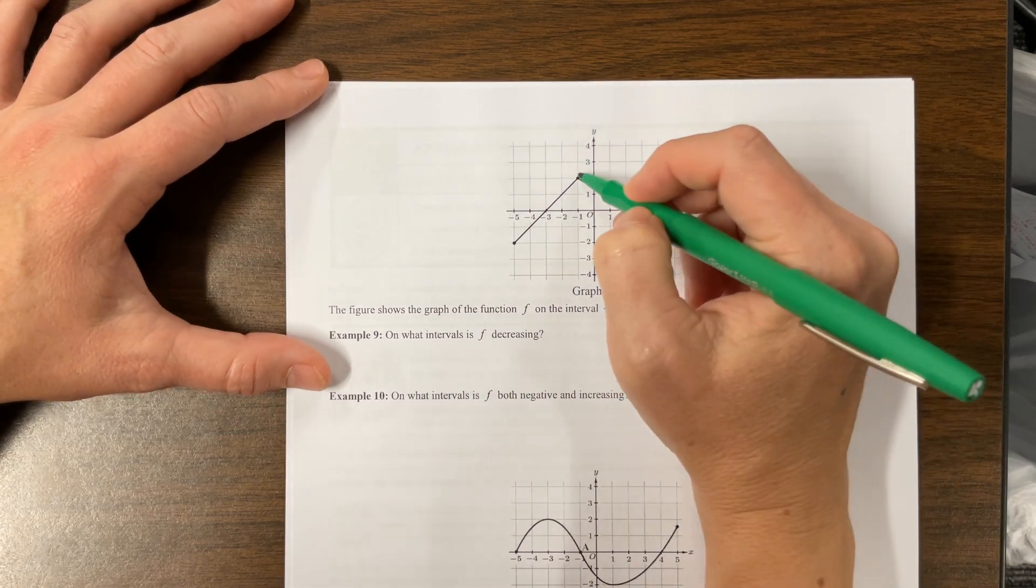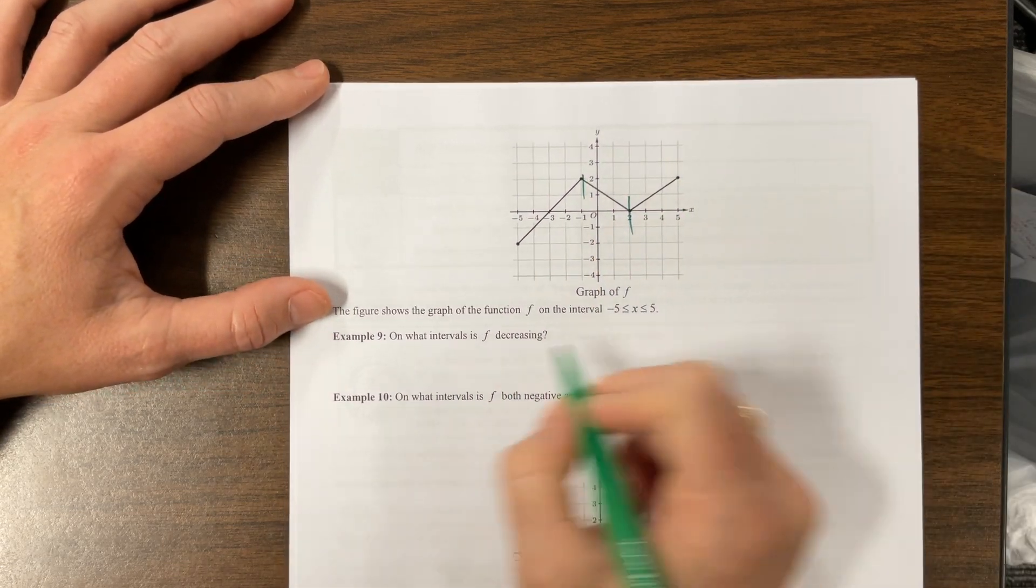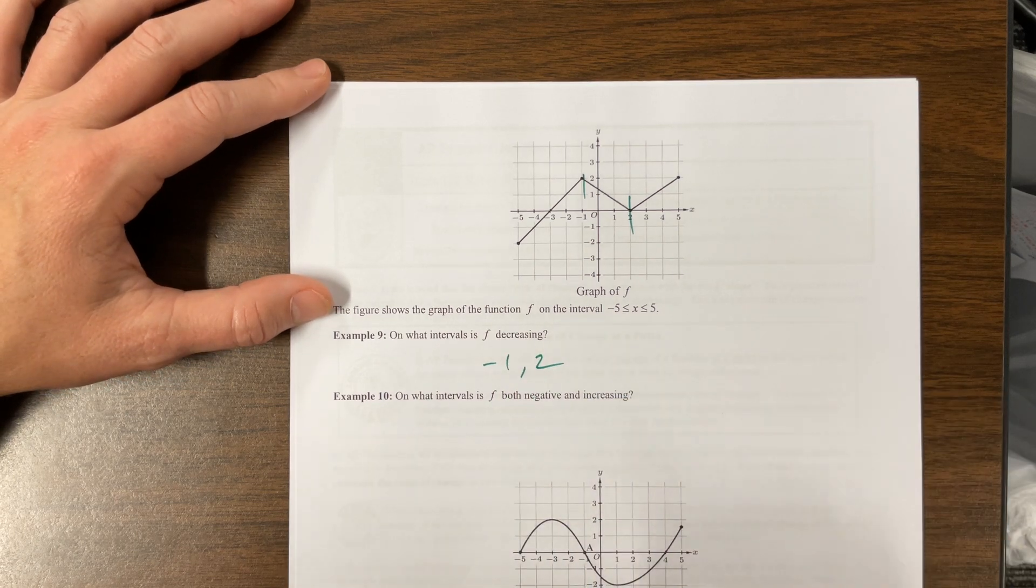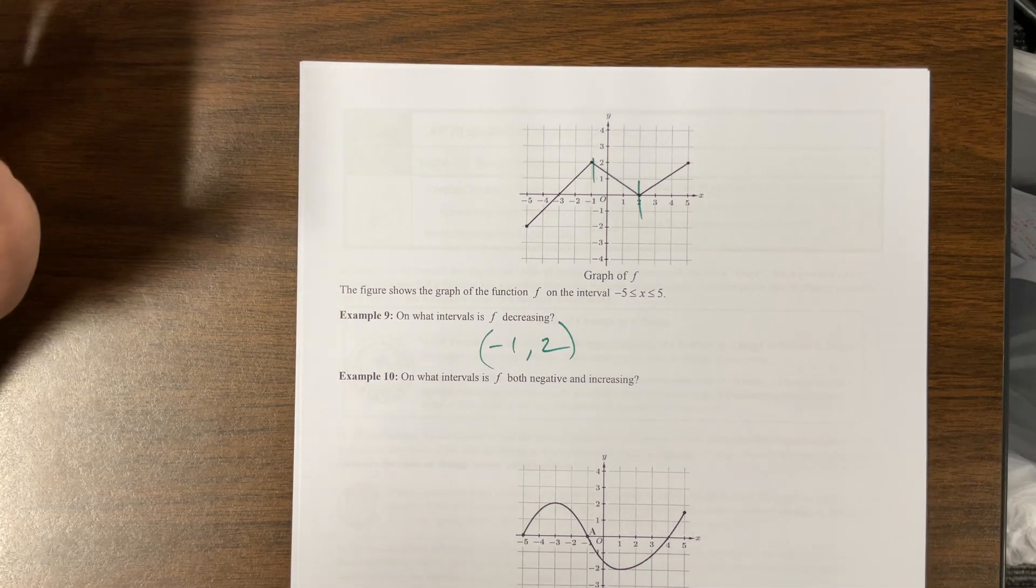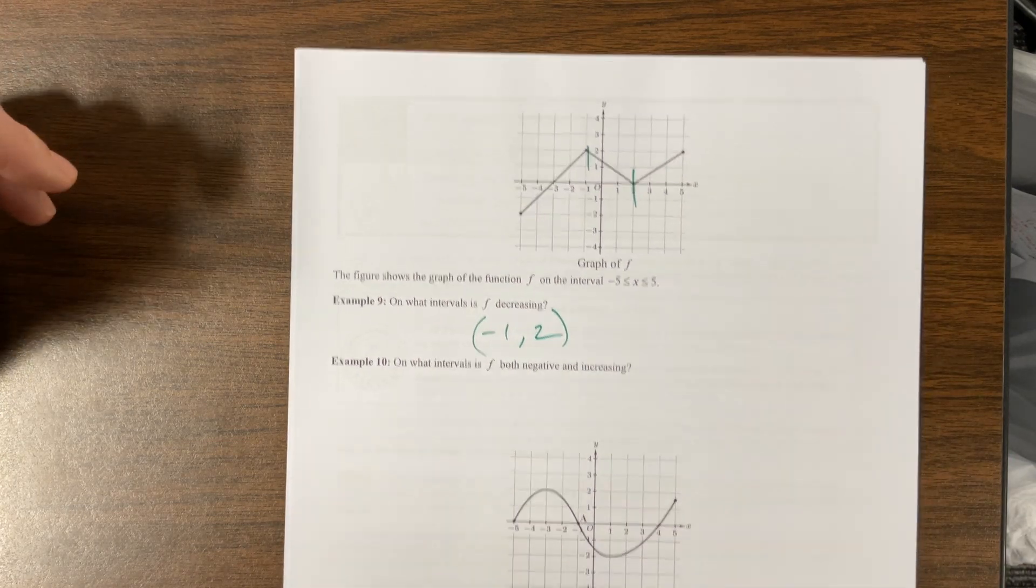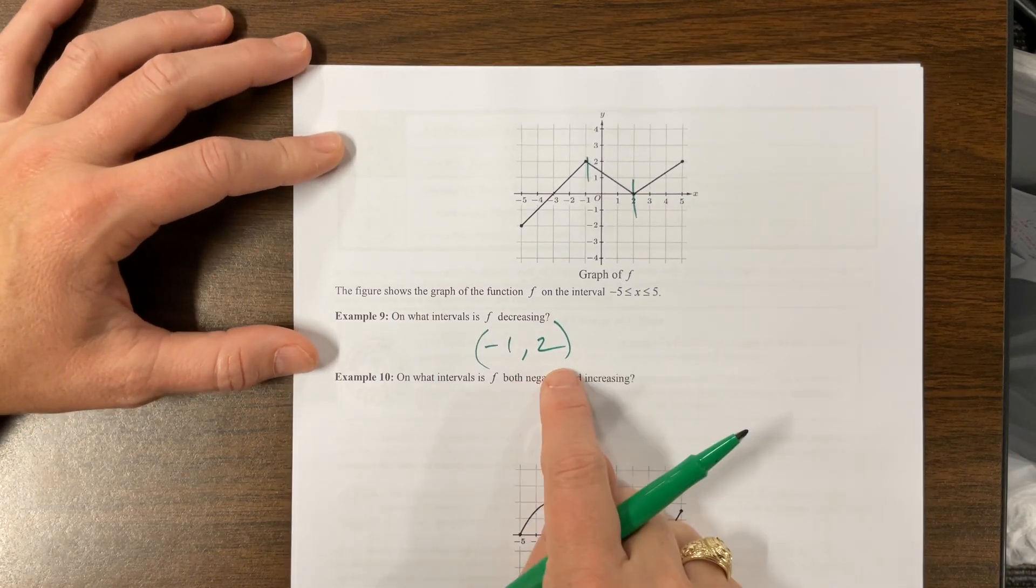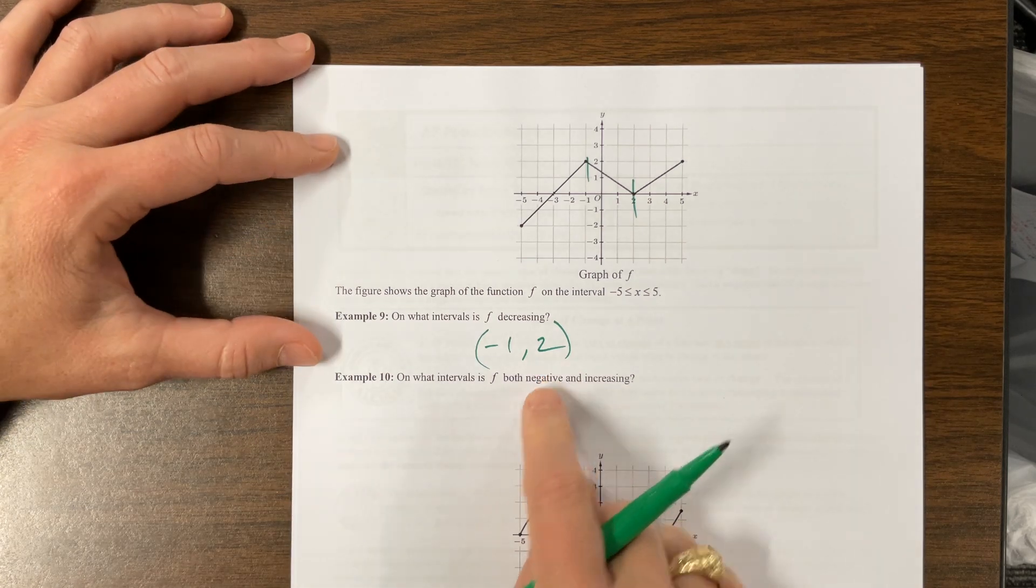Okay. On what intervals is F decreasing from here to here. So negative one to two. And we talked in my last video, I prefer soft brackets, but my colleagues, some of them prefer hard brackets. And I think AP would be okay with either. I don't know that they're going to make you write problems like this. I think it'll show up in multiple choice.